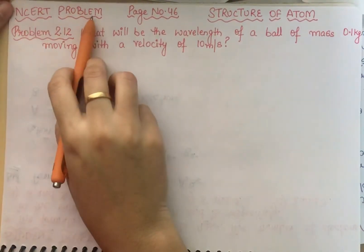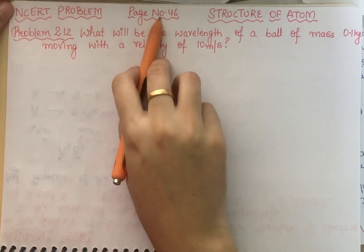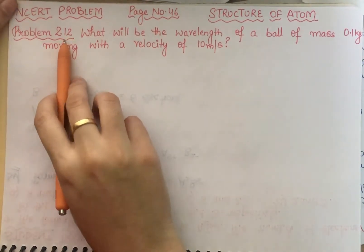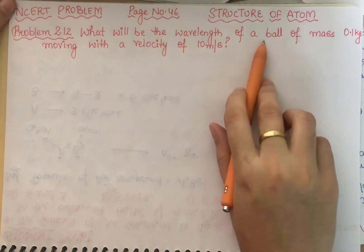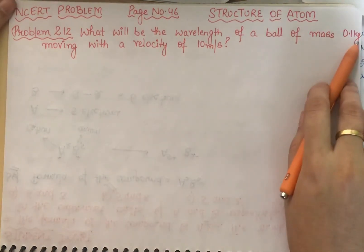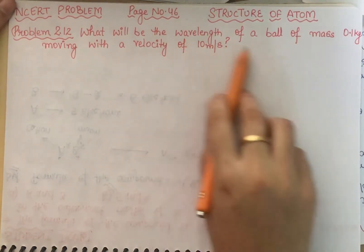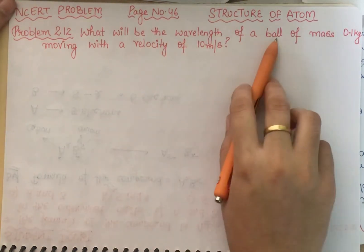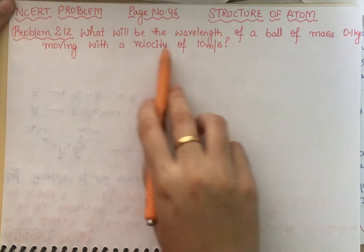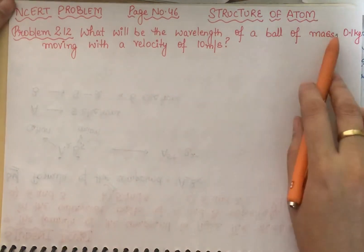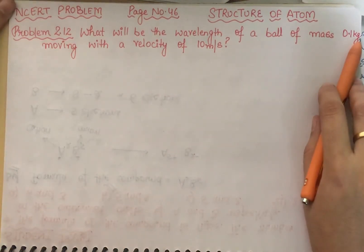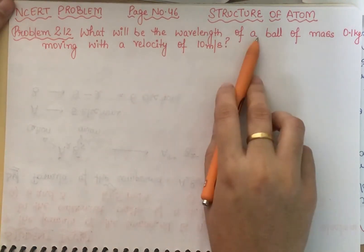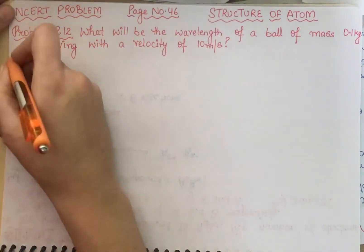This is NCERT problem on page number 46, problem number 2.12. The statement: what will be the wavelength of a ball of mass 0.1 kg moving with a velocity of 10 meter per second? You have to find the wavelength of that ball.